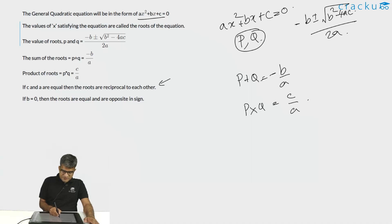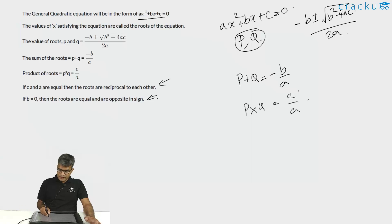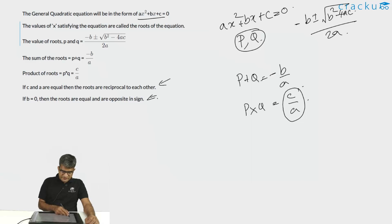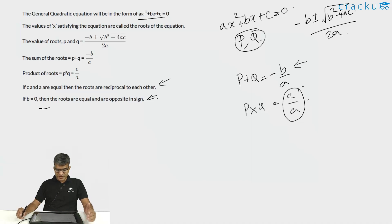Now we also have some small shortcuts. If c and a are equal, that implies c/a = 1, meaning the product of the two roots is equal to 1. This implies the two roots are reciprocals of each other. Similarly, if b = 0, the sum of the roots will be equal to 0, which implies both roots are equal and opposite in sign.